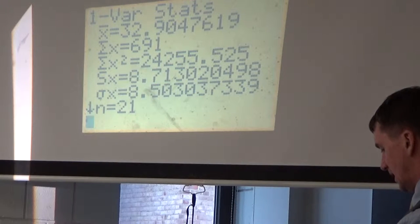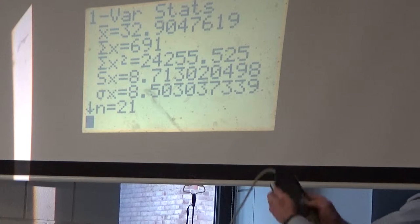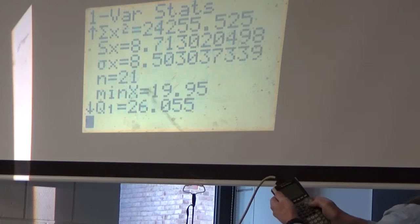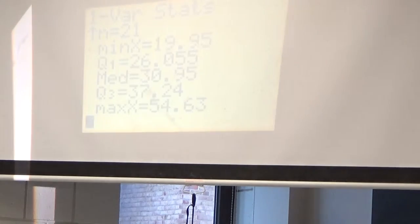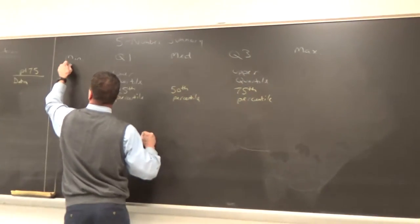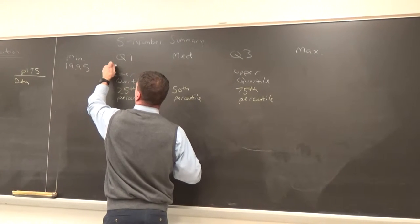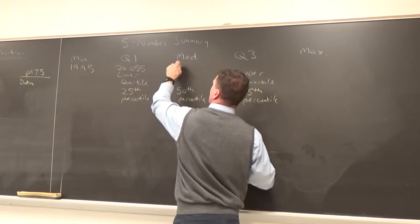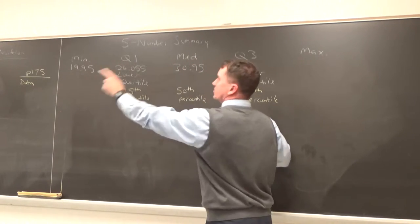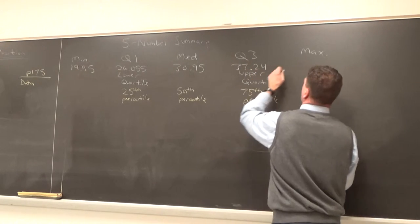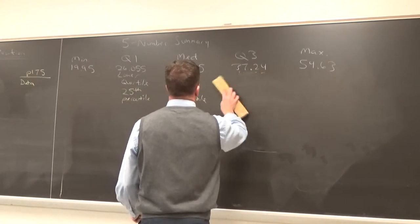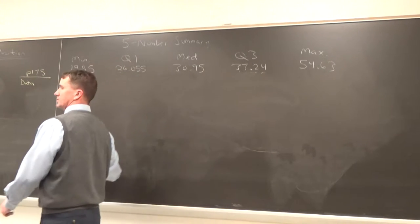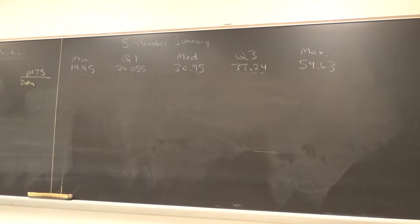But if you ever lose a list, and you can't find me to help you get it back, just put everything in L2 and just put in L2 after that. All right, let's put these numbers down. I don't see them though. Where are they? I need to use the down arrow. There's the min 19.95, I guess I can hit the lights now. 19.95, this is in minutes, and then the Q1, that was the min 19.95. The Q1 was 26.055, the median is 30.95, the Q3 is 37.24, and then you have the max 54.63 minutes. And then you have the five number summary, that's it.